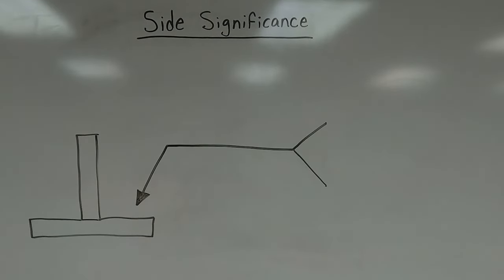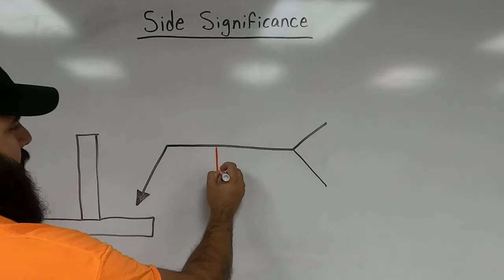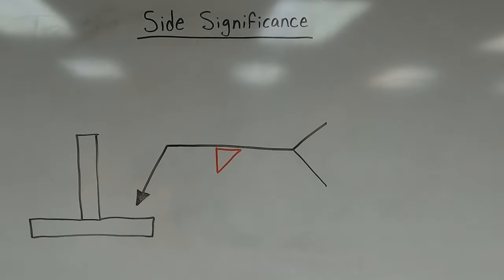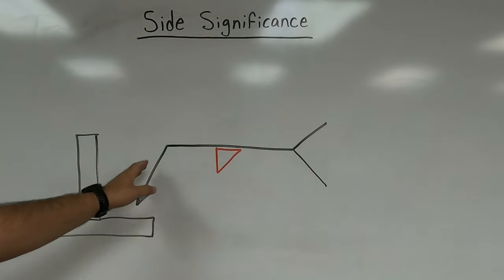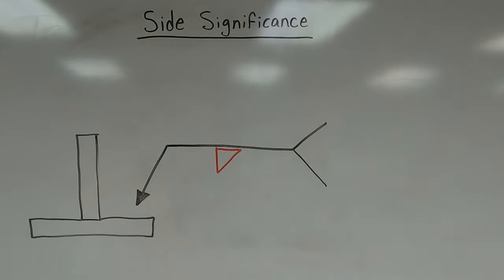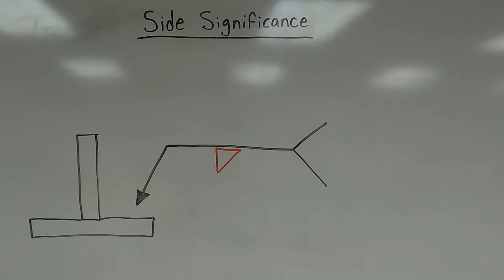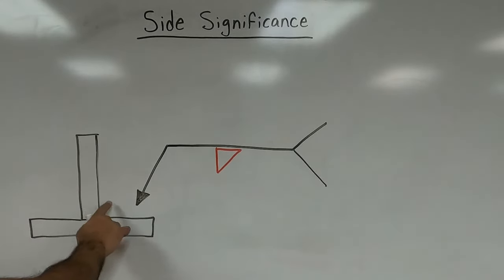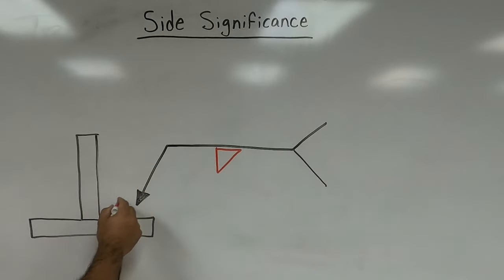Here's another example with the reference line flipped in the other direction. Does this change side significance? It does not. Whether the reference line points left, right, up, down, or has multiple breaks, whatever is written on the bottom is always arrow side and whatever is on top is always other side. Same principle: follow the reference line, see which side of the T-joint is being pointed to, and deposit the fillet weld there.